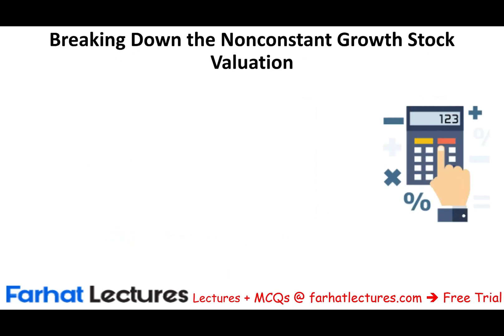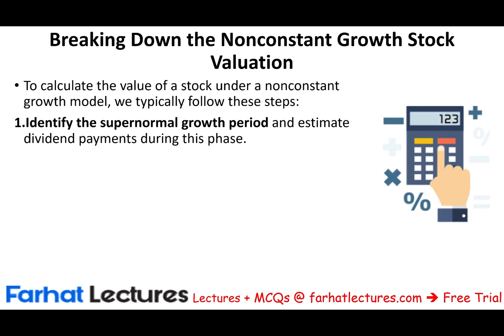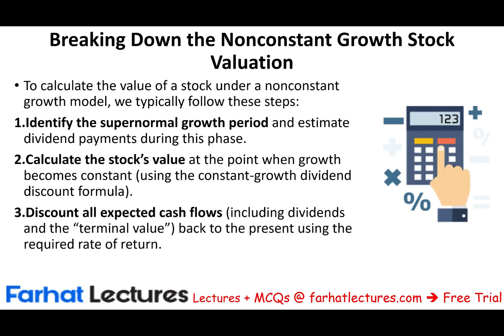Let's break down the non-constant growth stock valuation and see how it works. To compute the stock price under this model, we typically follow these steps. First, identify the supernormal growth period and estimate dividend payments during this phase. Second, compute the stock value at the point when growth becomes constant using the constant period dividend discount formula. Then, discount all the cash flows to the present. It's a two-stage process: compute the supernormal growth rate, then compute the constant growth dividend — because eventually the company will mature and grow at a certain rate. All companies will end up in the constant growth phase.